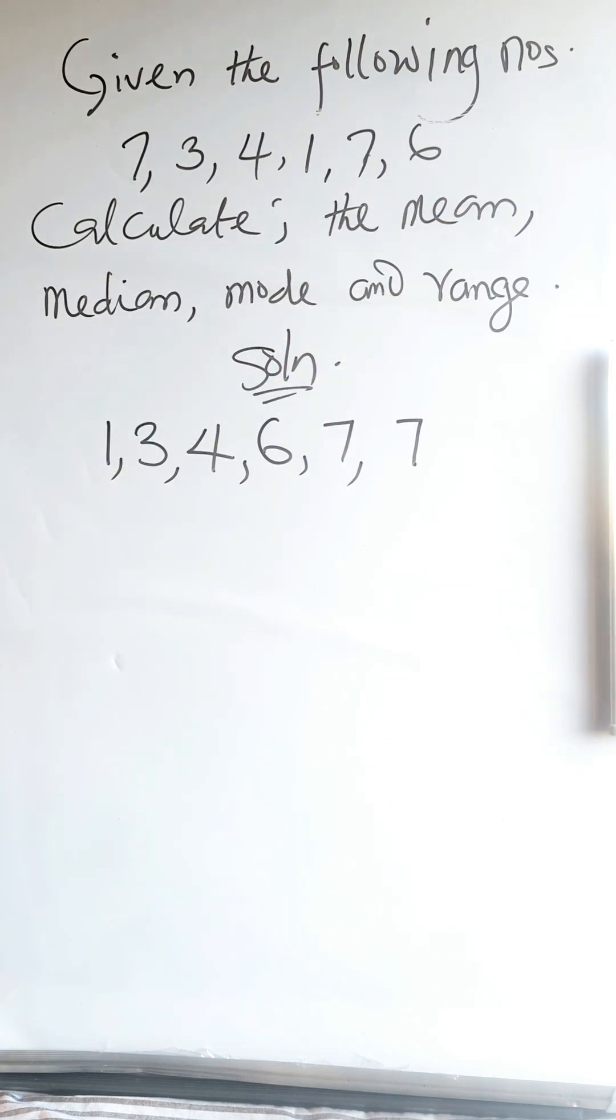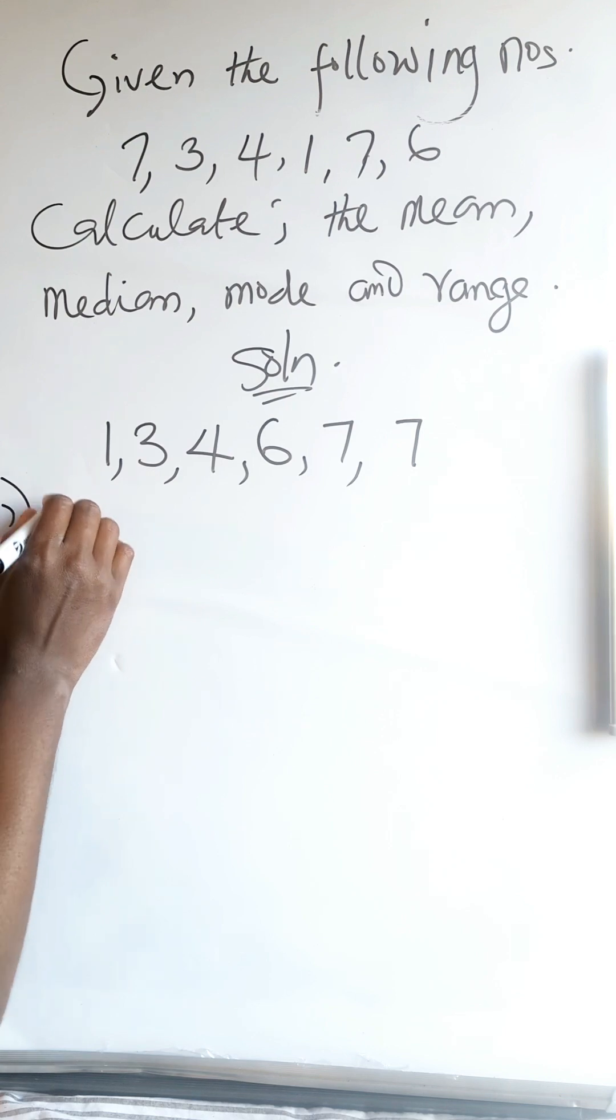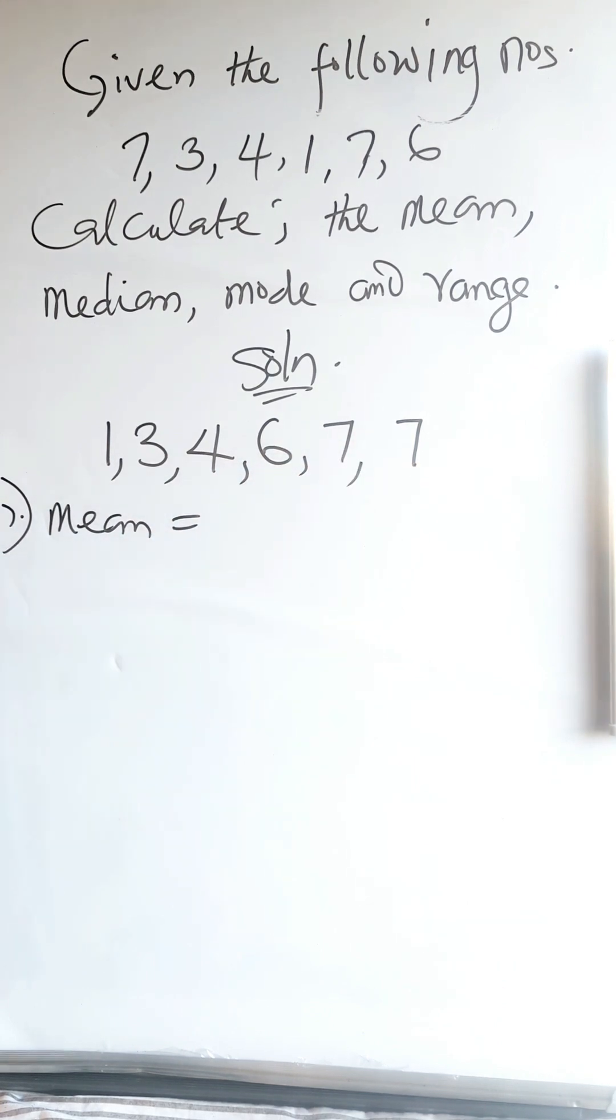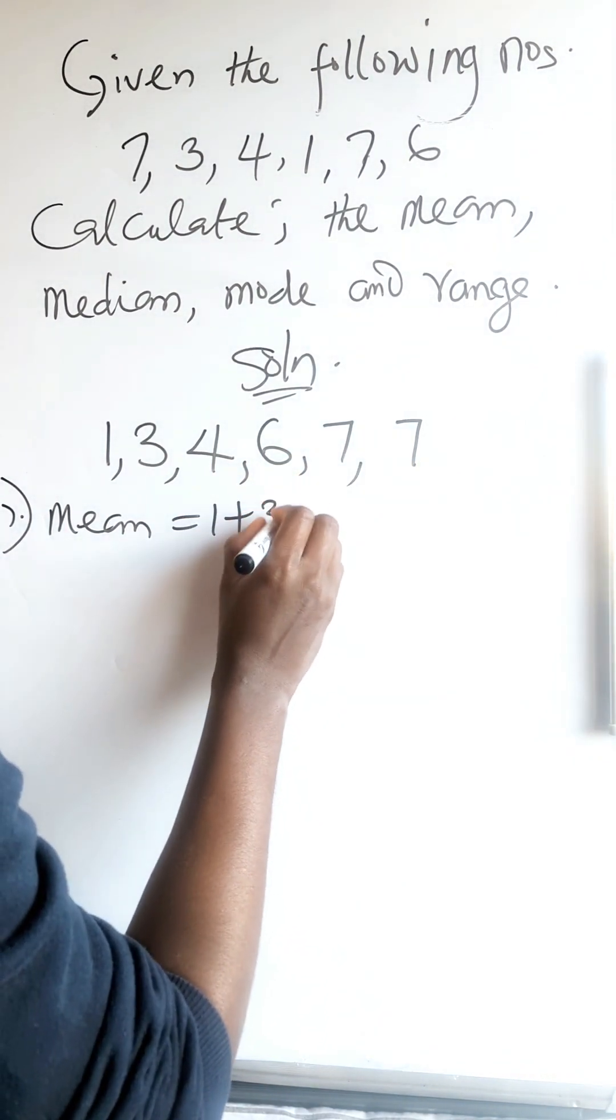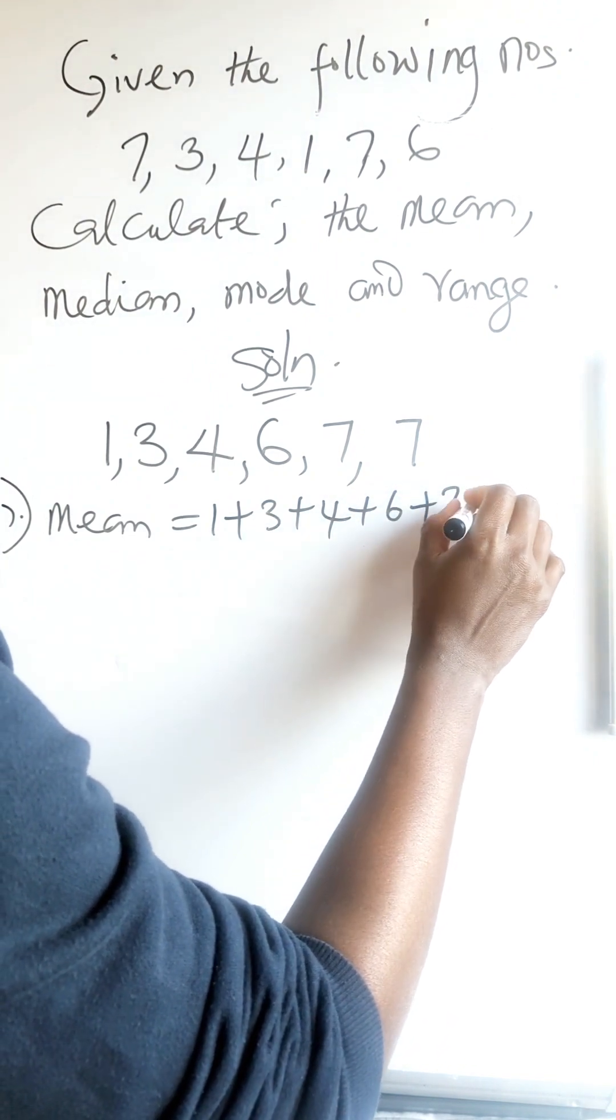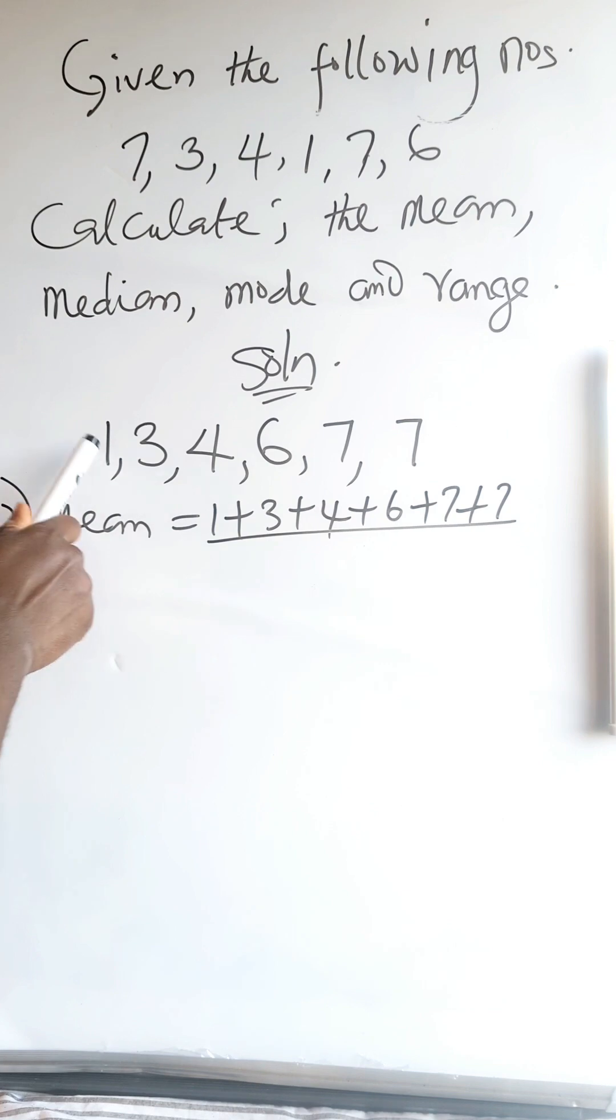Now the first question says calculate the mean. The mean is the same thing as the average. So to get the average, you just sum all these numbers: 1 plus 3 plus 4 plus 6 plus 7 plus 7, all over how many are they? 1, 2, 3, 4, 5, 6. All over 6.